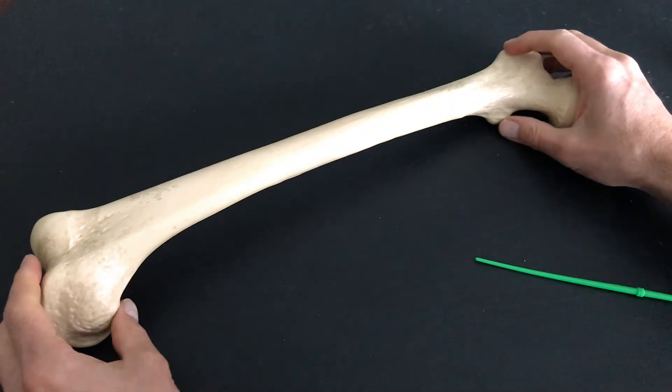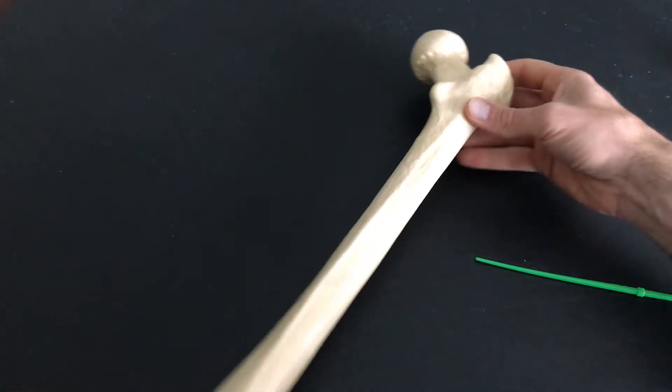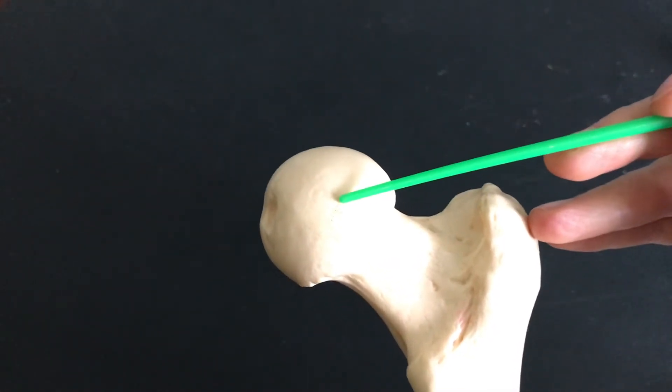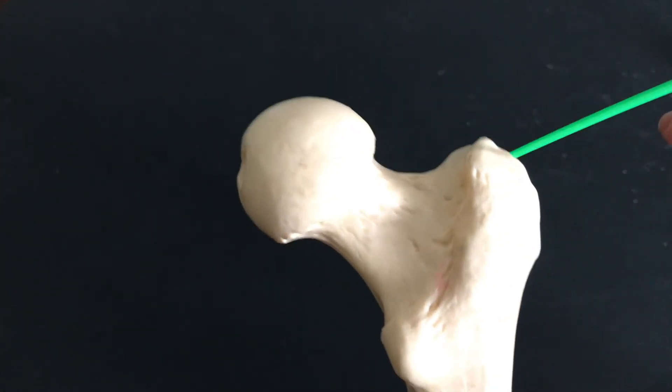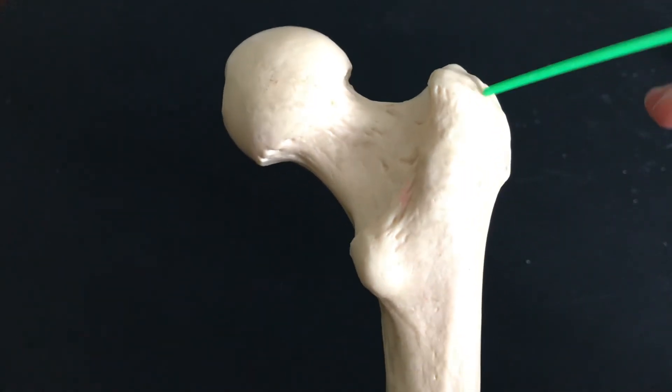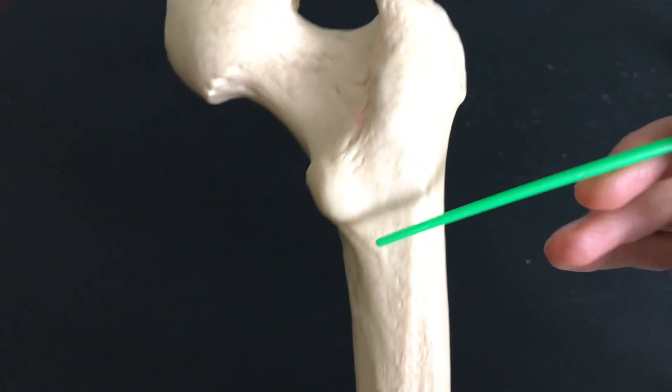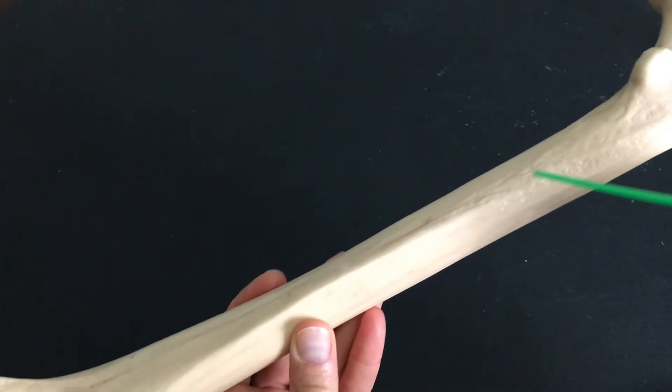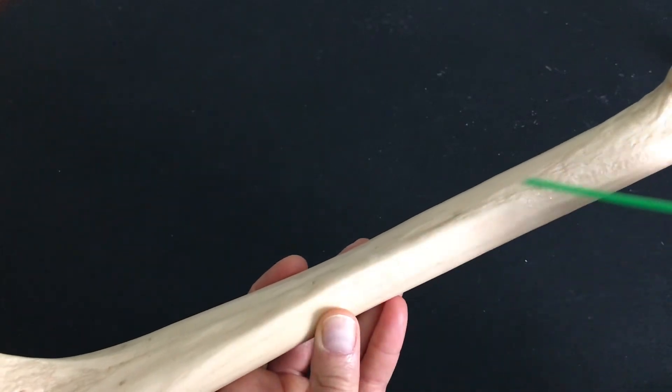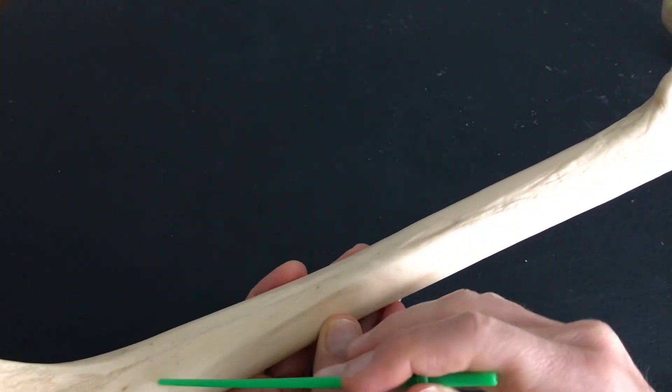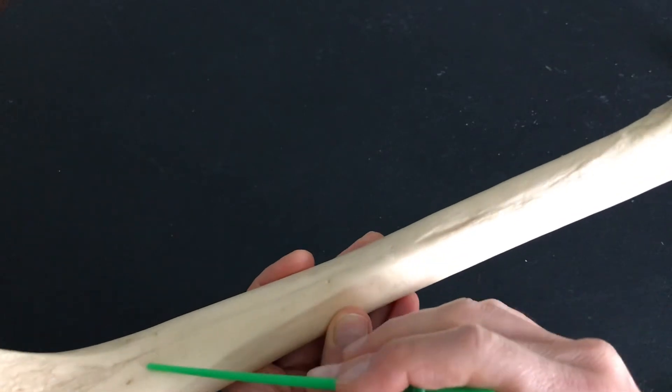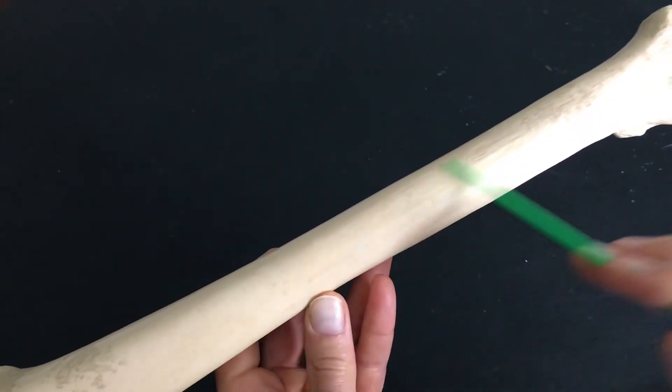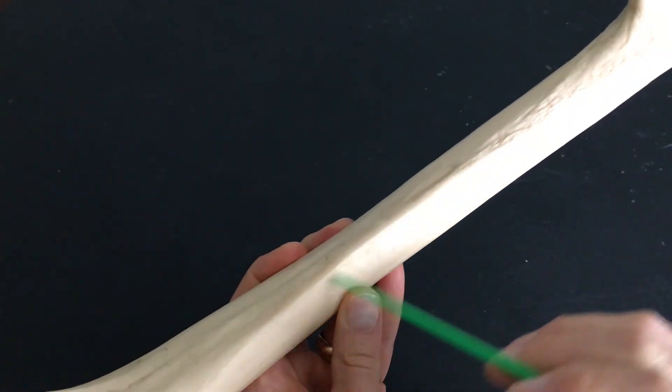When I turn this guy over here, now we're looking at the posterior side. A little bit of a closer view again. We have the head. We have the neck. Greater trochanter is large. Lesser trochanter is smaller. But this time, when we come down the diaphysis here, there's a roughened surface along the posterior side here. This roughened surface is what we call the linea aspera. We're smooth on the anterior side, but the posterior side, we have this linea aspera.